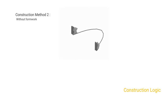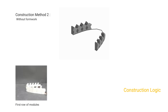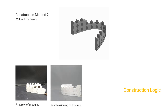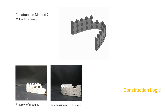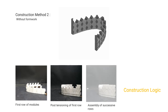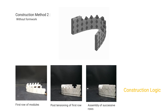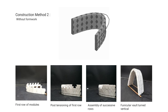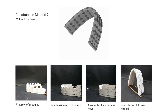In construction method two, a catenary arch is drawn on the ground along which modules are assembled, as shown in the video. To build the first arch, it is kinematically constrained with tension cables before the next layers are assembled. The process is repeated for successive layers, and on completion, the entire assembly is turned vertical and placed in position with the help of a crane or mechanical system.